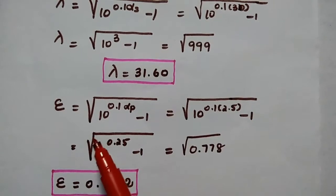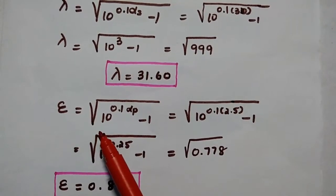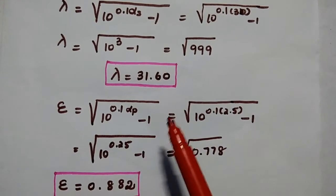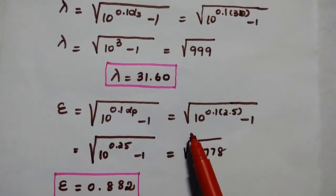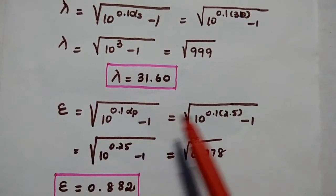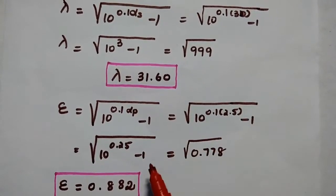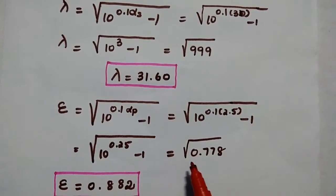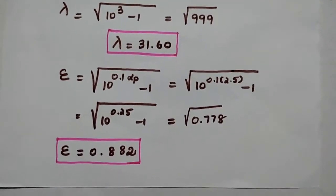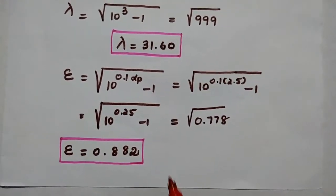Similarly, we find the value of epsilon. Epsilon is equal to the square root of (10^(0.1 × alpha_P) − 1). That equals the square root of (10^(0.1 × 2.5) − 1), which gives the square root of 0.778, equal to 0.882.